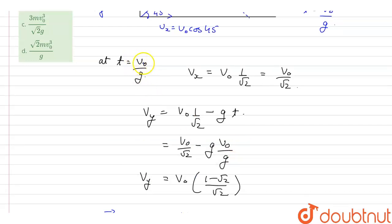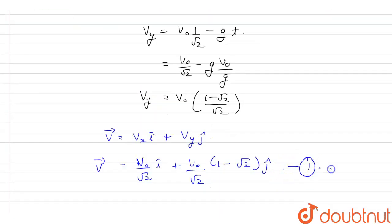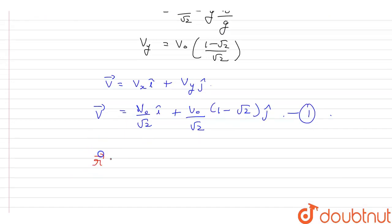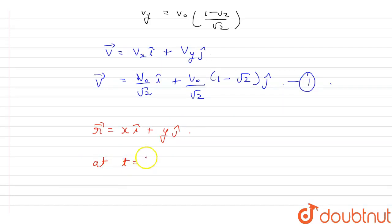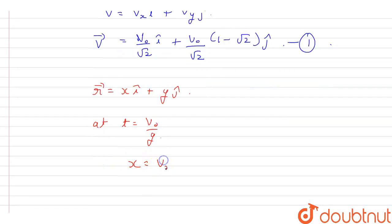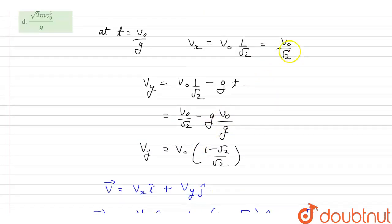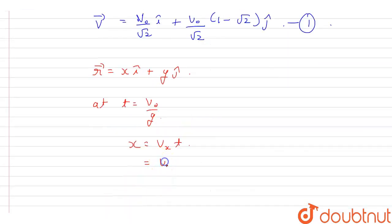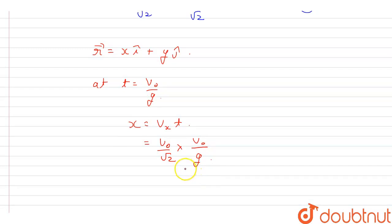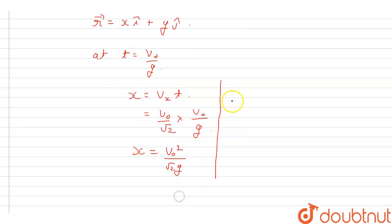The velocity vector at time t equal to v0 upon g is v0 upon root 2 i-cap plus v0 upon root 2 times (1 minus root 2) j-cap. Call this equation 1. For the position vector r equal to x i-cap plus y j-cap, at time t equal to v0 upon g, x equals vx times t, which is v0 upon root 2 multiplied by v0 upon g, giving x equal to v0 squared upon root 2 g.